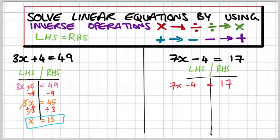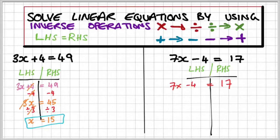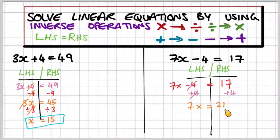So this is my working out. I've set up 7x minus 4 is equal to 17. I'm not going to touch the 7 — I'm going to get rid of the negative 4 first. The inverse of subtraction is addition, so I'm going to add 4 on both sides. Minus 4 plus 4 cancel out, and I get 7x equals 21 because 17 plus 4 is 21.